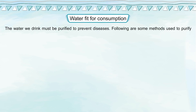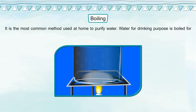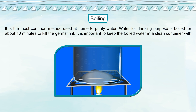Water fit for consumption. The water we drink must be purified to prevent diseases. Boiling is the most common method used at home to purify water. Water for drinking is boiled for about 10 minutes to kill the germs in it. It is important to keep the boiled water in a clean container with a lid.